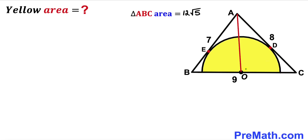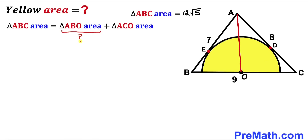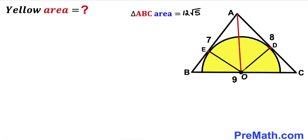In the next step, I connect center O with vertex A, which divides triangle ABC into two triangles: triangle ABO and triangle ACO. Therefore, the area of triangle ABC equals the area of triangle ABO plus the area of triangle ACO.